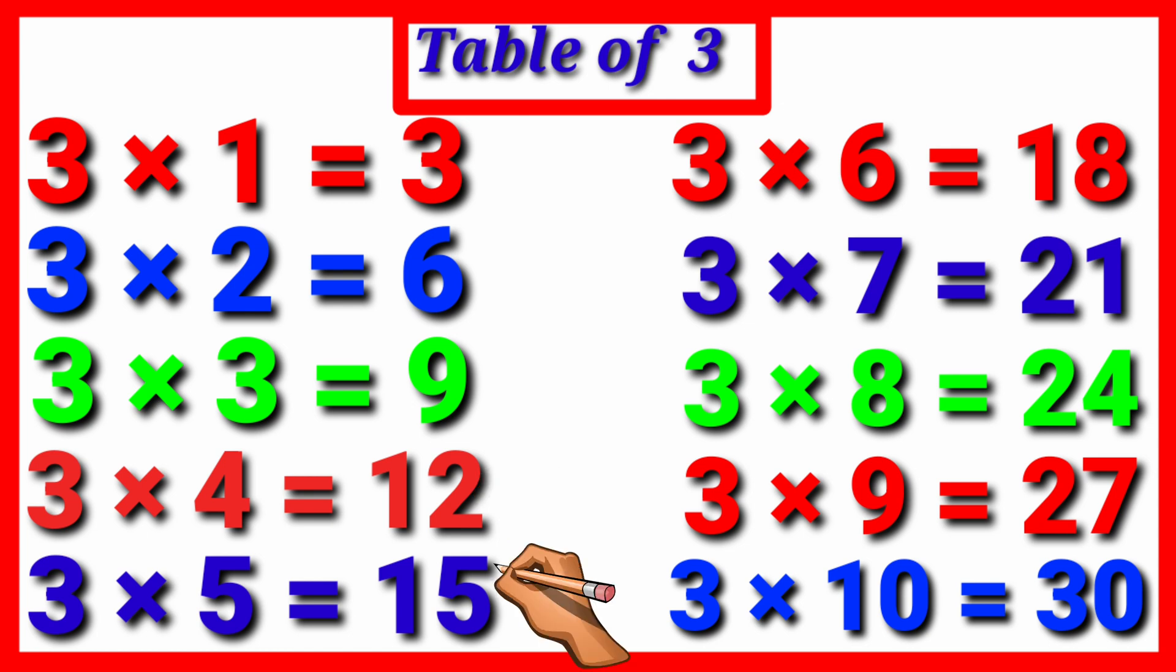Three fives are fifteen. Three sixes are eighteen. Three sevens are twenty-one.